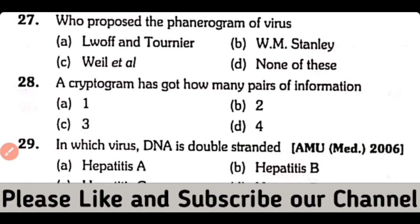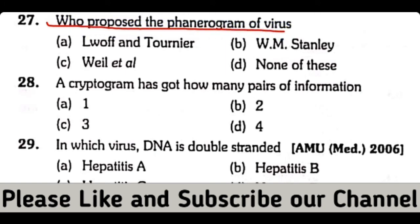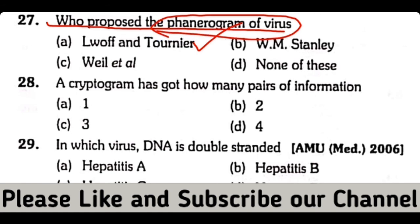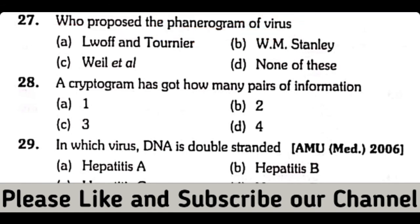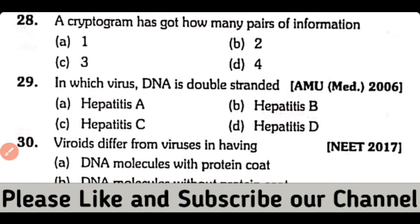Question number 27. Who proposed the cryptogram of viruses? Loaf and Tornier, W.M. Stanley, Willett, or none of these. So the correct answer is option A. Loaf and Tornier proposed the cryptogram of viruses.